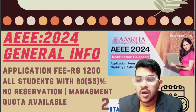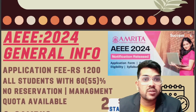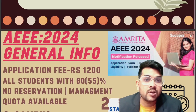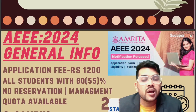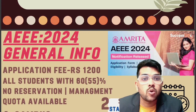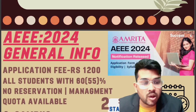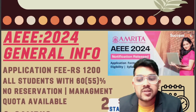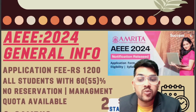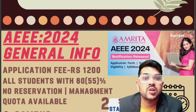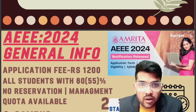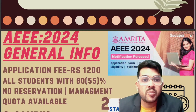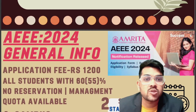Regarding reservation, there is no reservation based on category - that is General, EWS, OBC, SC, or ST. But there is a reservation for homestate students. For example, for the Coimbatore campus, Tamil Nadu students will get the benefit; similarly for Bangalore, Karnataka; Amritapuri, Kerala - and so on. There will be 50% seat reservation available for homestate students, based on last year's trend.